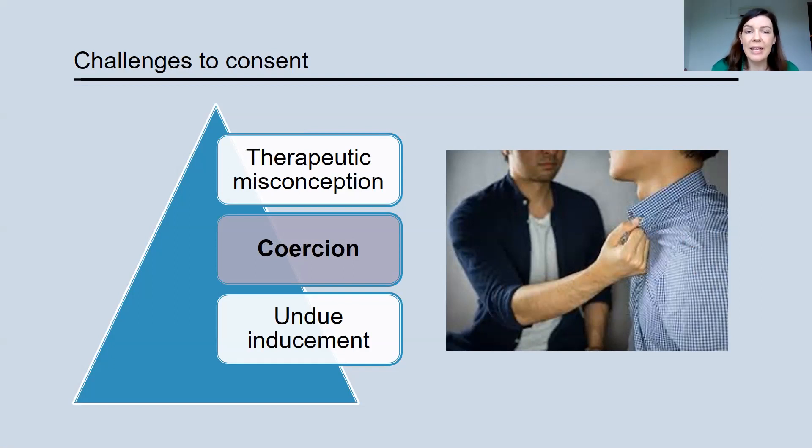So coercion is a threat to make someone worse off or to harm them in order to motivate them to do something. So here, if the patient perceives that they will receive a lower standard of care, that they will be harmed or neglected by their doctor if they don't participate in research, this could be a form of coercion that is undermining the voluntariness of their decision.